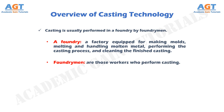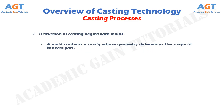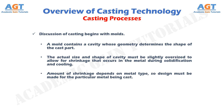Discussion of casting begins with molds. A mold contains a cavity whose geometry determines the shape of the cast part. The actual size and shape of the cavity must be slightly oversized to allow for shrinkage that occurs in the metal during solidification and cooling. The amount of shrinkage depends on the metal type, so the design must be made for the particular metal being cast.